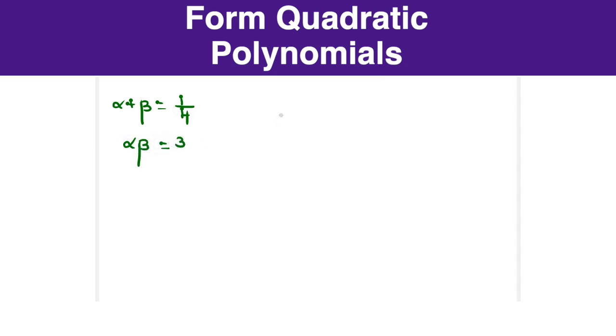Now let us form the equation. We know the format is x² minus (alpha plus beta)x plus alpha beta. Let us substitute the values: x² minus 1/4x plus 3. However, we never leave this equation if there is going to be a fraction. So it becomes important that you remove the denominator by taking LCM. I am going to multiply the entire polynomial with 4. So the expression becomes 4x² minus x plus 12.